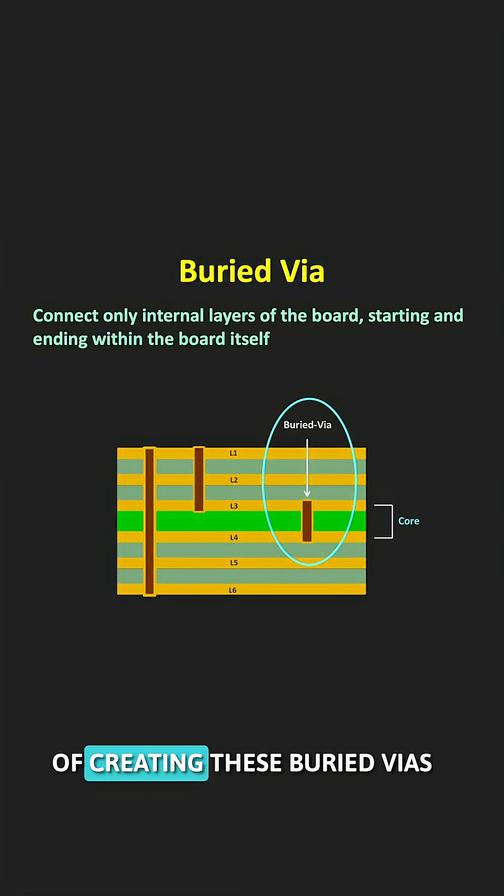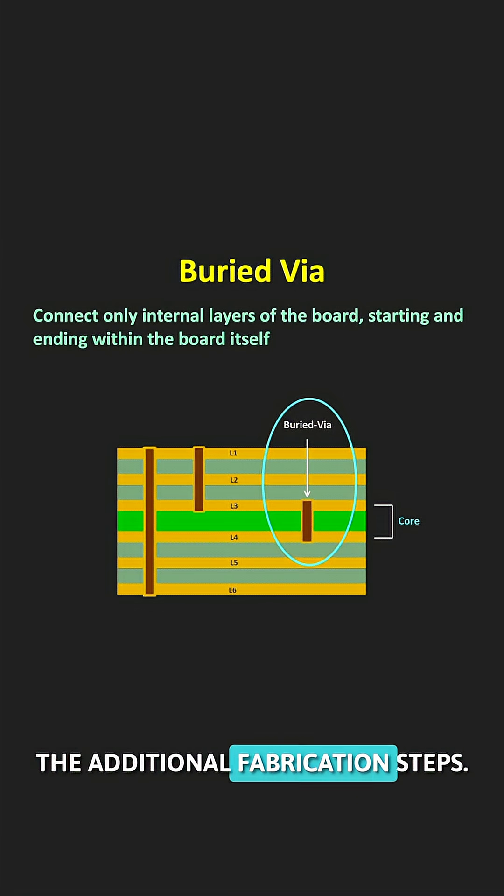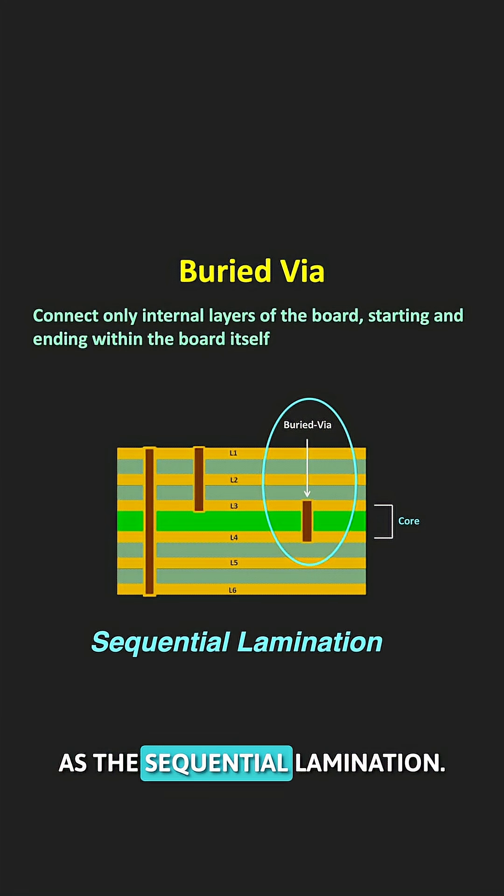The process of creating these buried or blind Vias requires additional fabrication steps. These steps are known as sequential lamination.